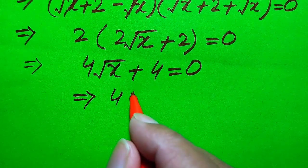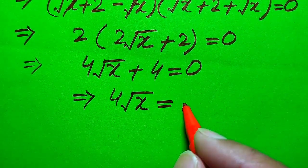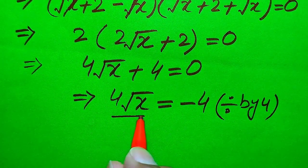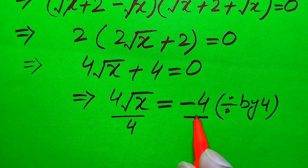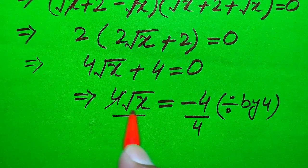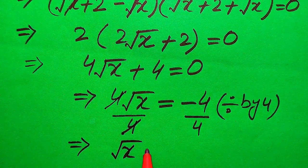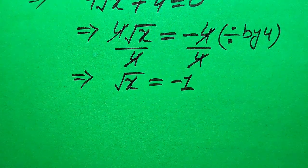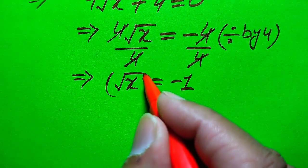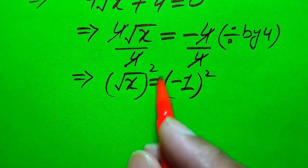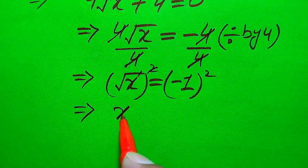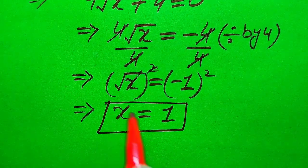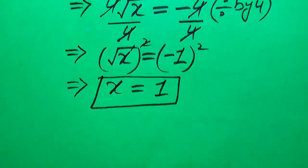Our target is to find the value of x. We move the plus 4 to the right-hand side, giving us 4 times square root of x equals minus 4. We divide both sides by 4, the fours cancel, and we obtain square root of x equals minus 1. To find x, we take squaring on both sides: the square and square root cancel, giving us x equals minus 1 squared, which equals positive 1.